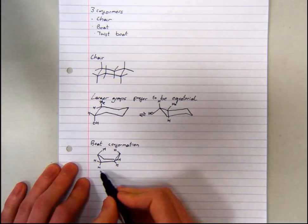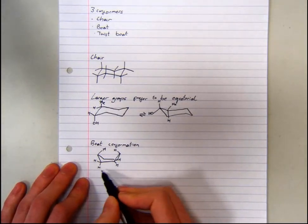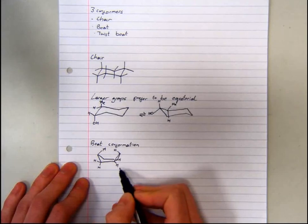The first of which is these hydrogens here, are now eclipsing each other, which causes torsional strain, which is unfavourable.